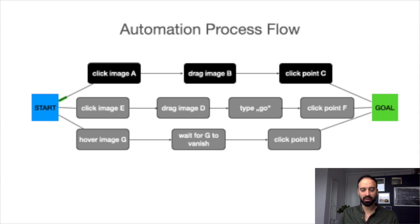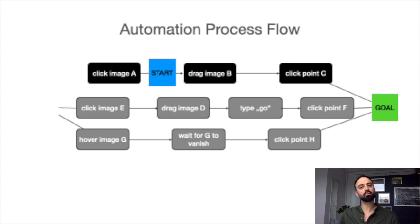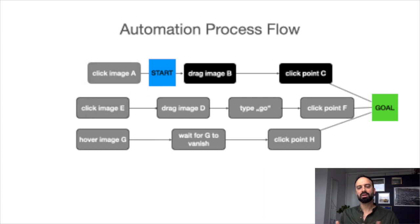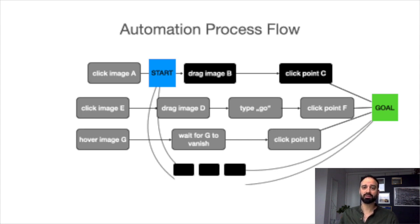This happens because when you finish one step, those additional paths you created are no longer applicable. From that new starting point, you need to create new paths. And every time you create a new path, to make sure that path is also robust, you might have to add additional code and create additional paths for that to succeed. So it adds a lot more complexity.